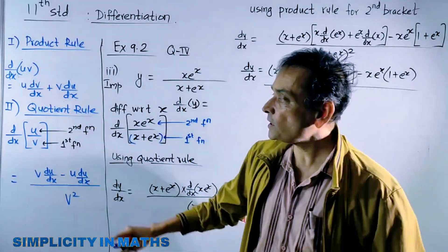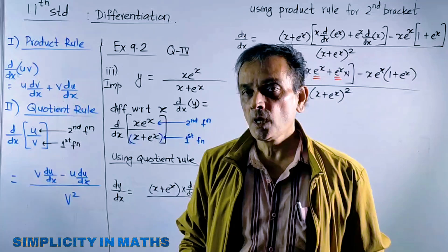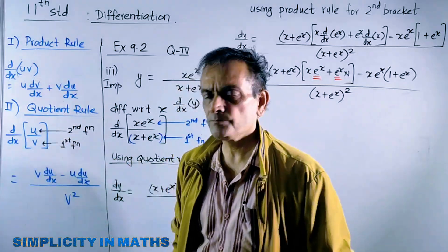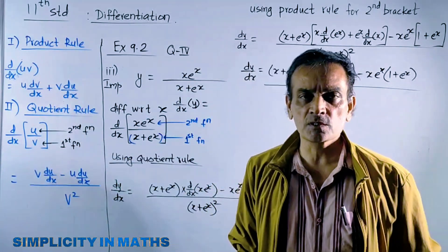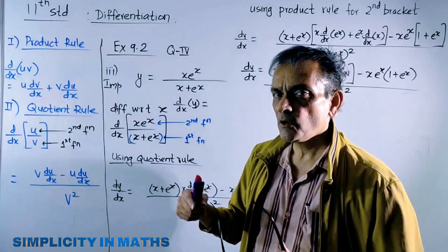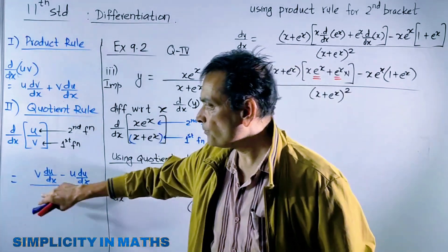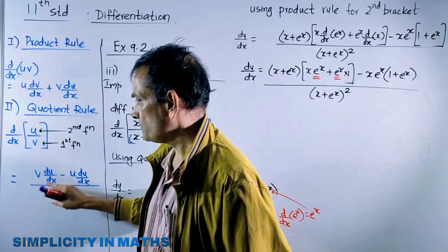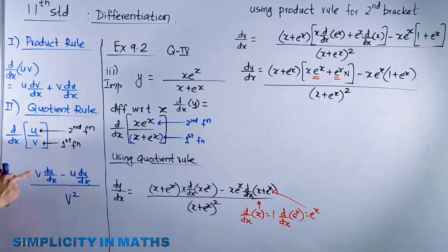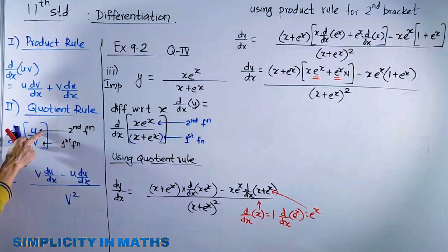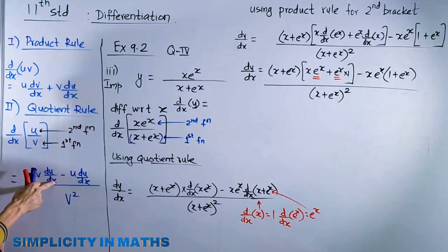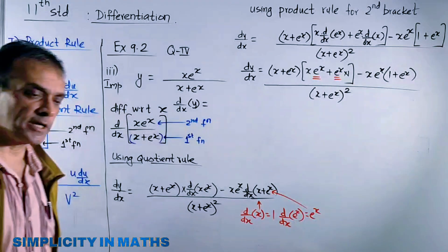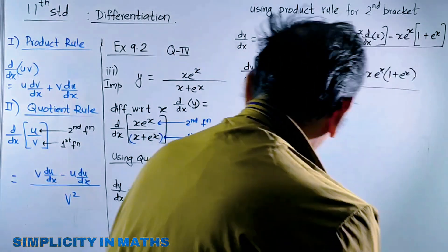Quotient rule. A quotient is a numerator upon denominator. For this, you have to be a bit careful. Call the numerator the first function and the denominator the second function. Denominator times derivative of first function, numerator times derivative of second function. How to use the quotient rule? Draw a big line. First function and second function are important here.